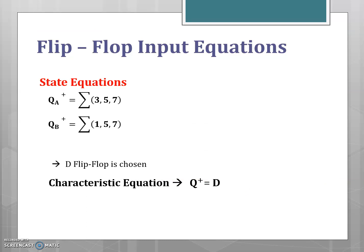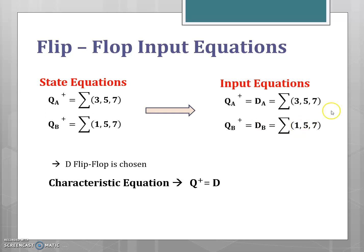Now the flip-flop input equations are determined from the characteristic equation. In this case, D flip-flops are chosen. The characteristic equation for a D flip-flop is Q+ = D, meaning the next state equals the D input. Therefore, the input equation DA equals QA+ and DB equals QB+, so the flip-flop input equations are the same as the state equations.